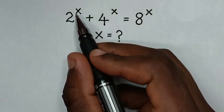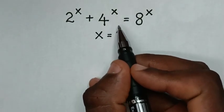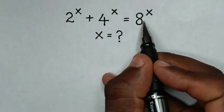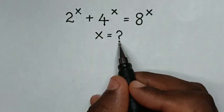How to solve 2 power x plus 4 power x is equal to 8 power x, to find the value of x.